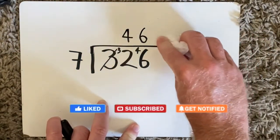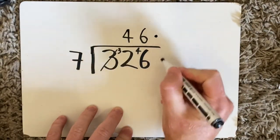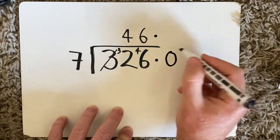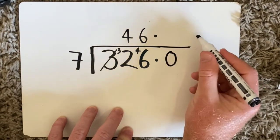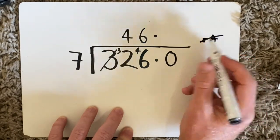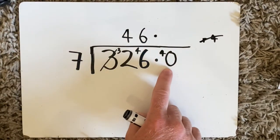So I get rid of the remainder 4 and instead put decimal point, decimal point and draw a zero. Then the remainder 4 that we had, I get rid of that and add the 4 here instead, making this number 40.